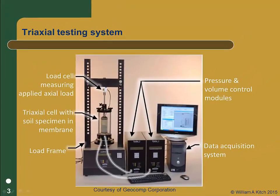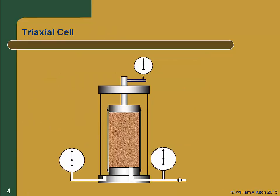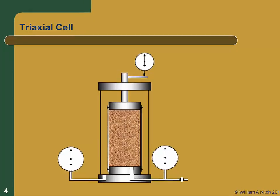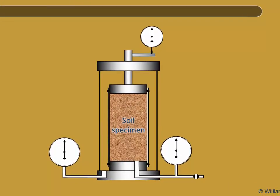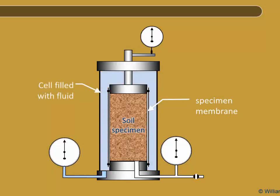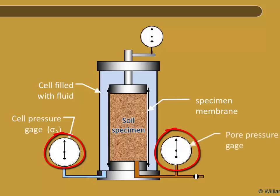Now let's take a closer look at the triaxial cell itself. This figure illustrates the triaxial cell and explains how it applies stresses to the soil and controls drainage conditions. The specimen sits on a pedestal inside the cell with a loading cap on top. It is surrounded by an impermeable latex membrane that separates the soil and its pore fluid from the fluid that fills the cell. There are two pressure gauges attached to the cell: one measures the pressure of the fluid within the cell, and one measures the pore pressure within the specimen itself.